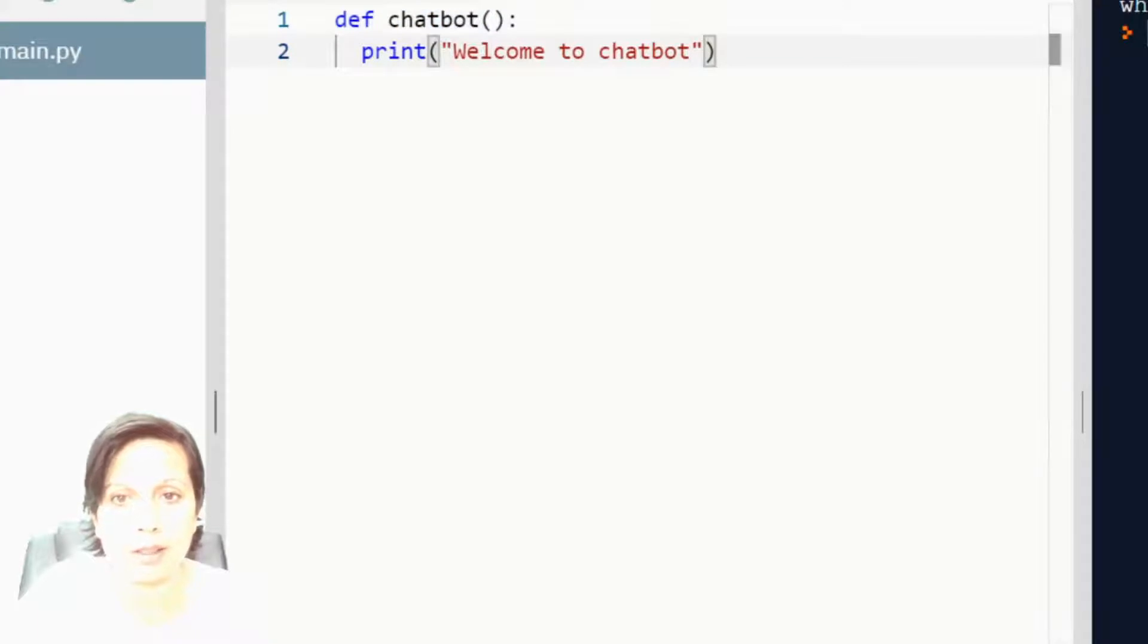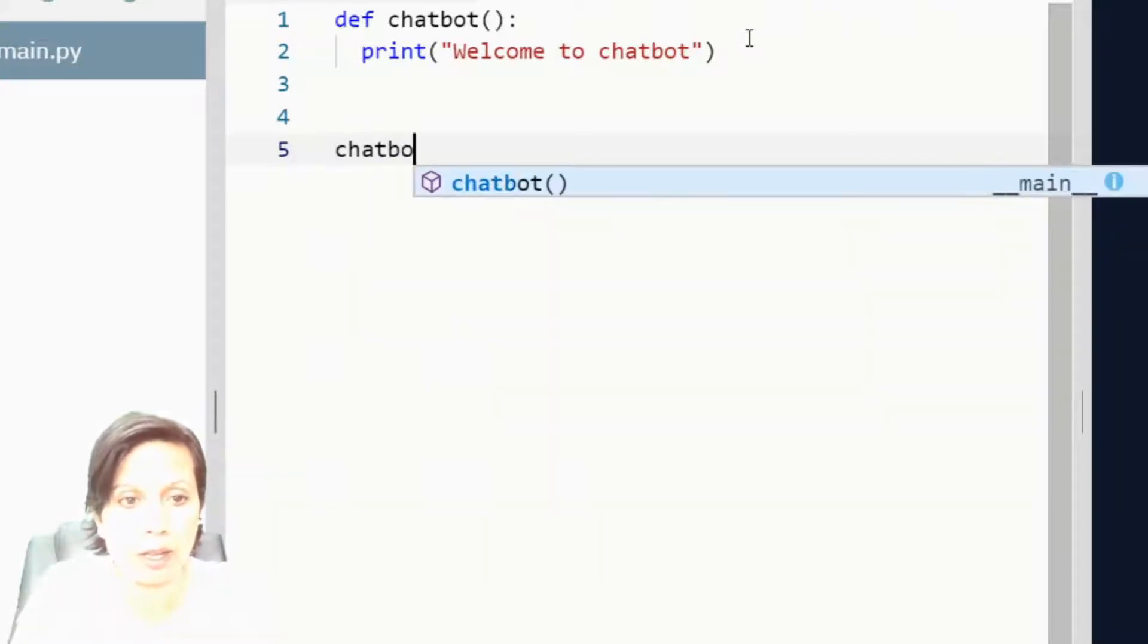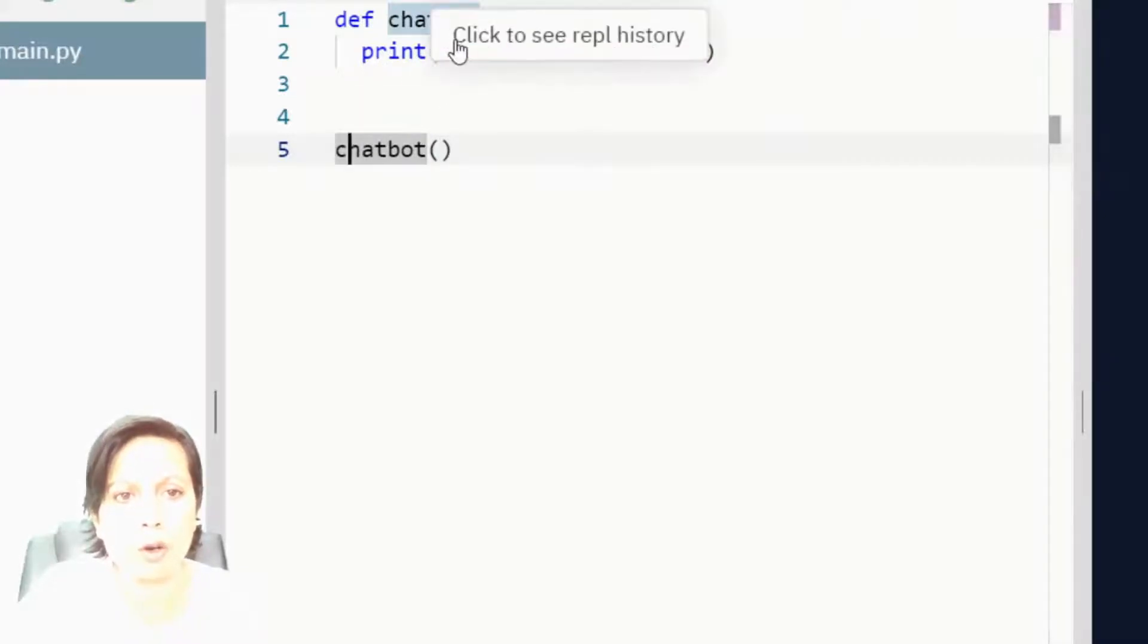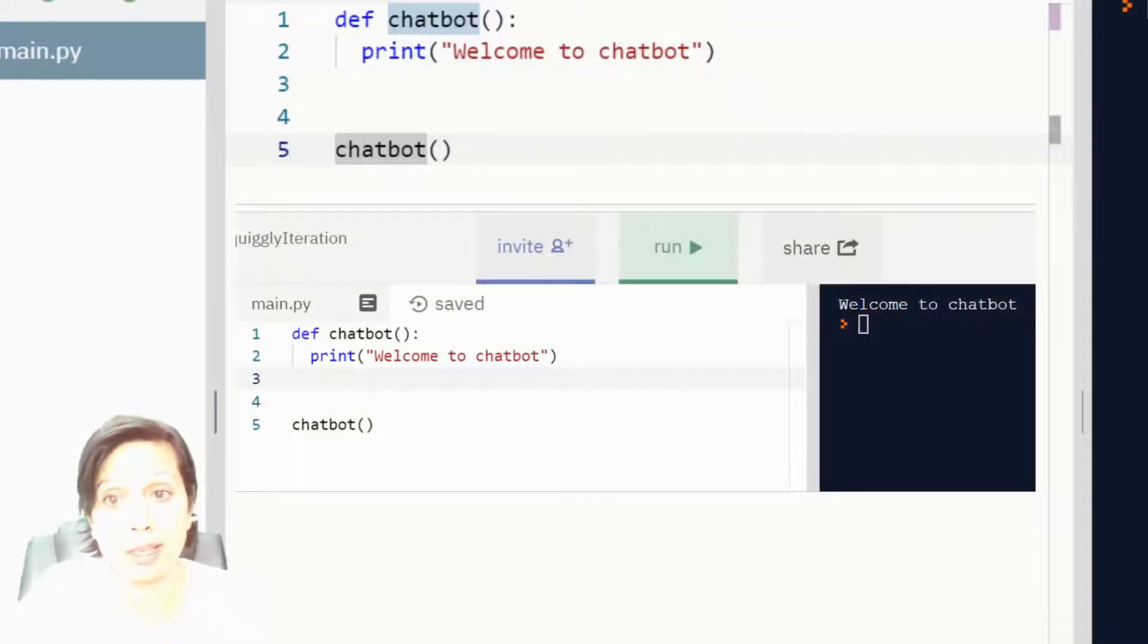So, if I run this, you'll see that nothing happens. And the reason for that is that I haven't called. That's how we talk about executing a function in programming. We haven't called the function. So, right at the bottom, not indented, because I don't want it to be part of the function. Right at the bottom, I've written chatbot. And I've called this function, which will now be executed.